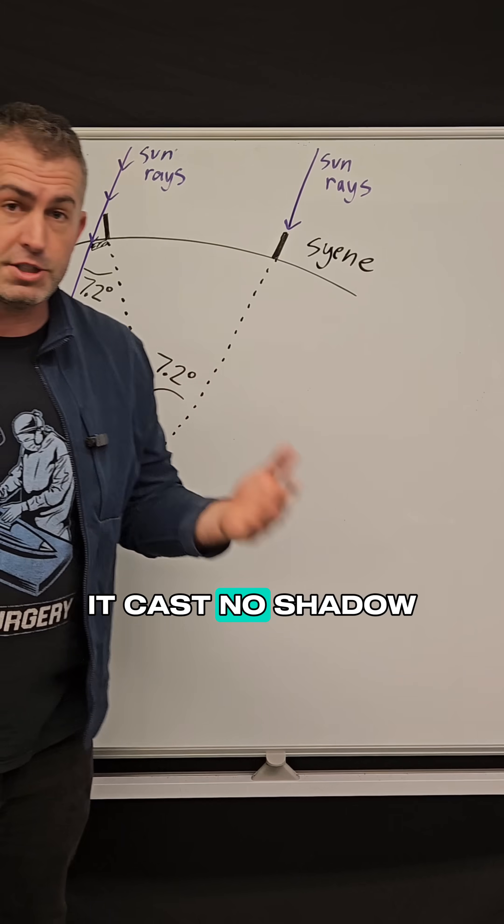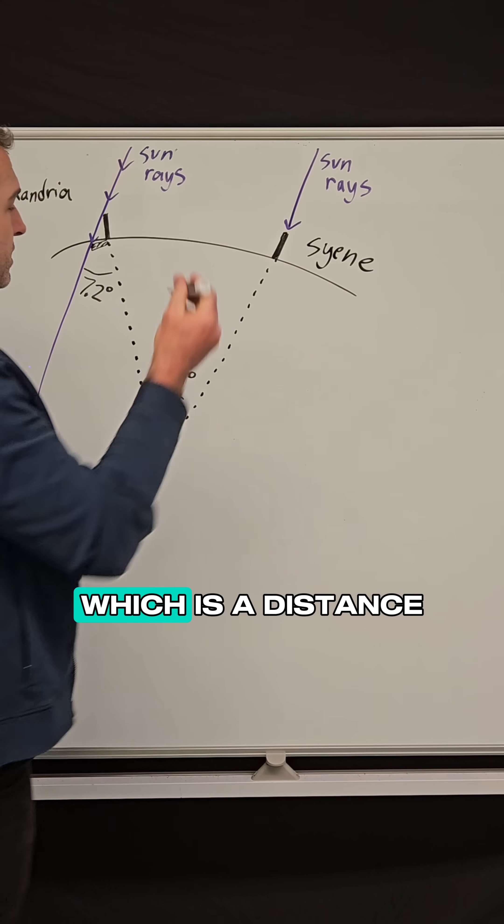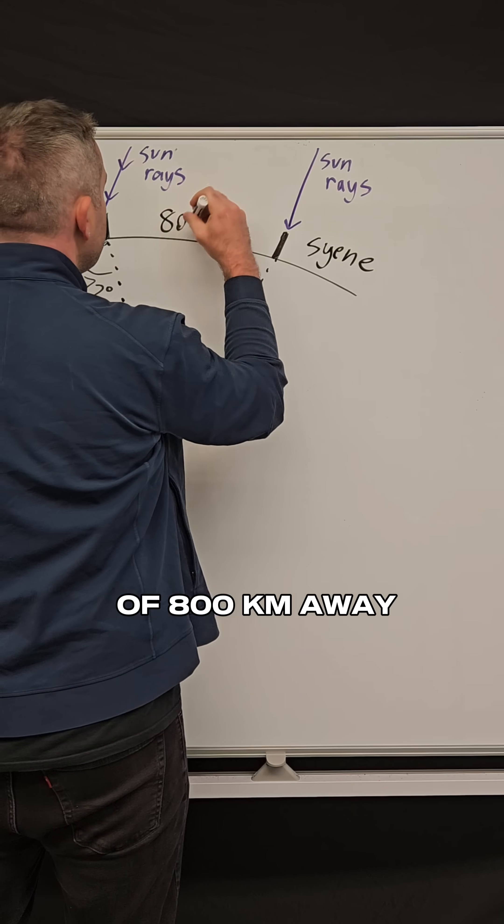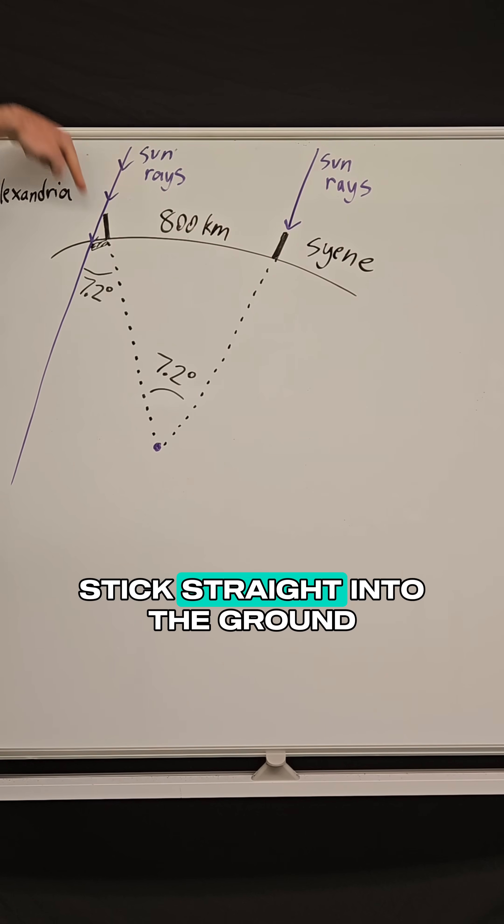But then he went over to the city of Alexandria which is a distance of 800 kilometers away, so very far away, and he planted a stick straight into the ground, nice and vertical.